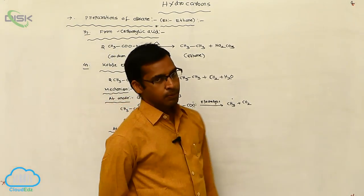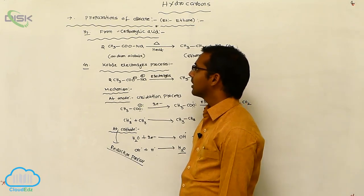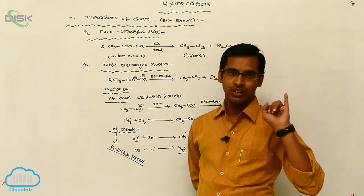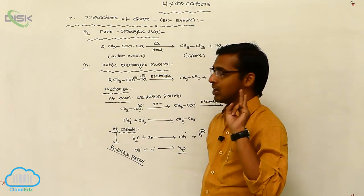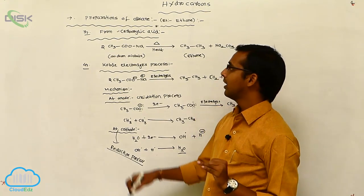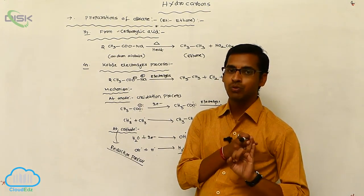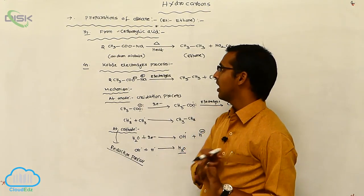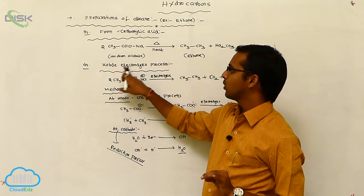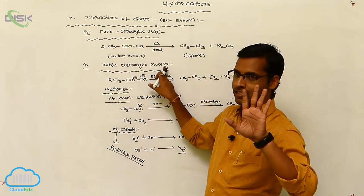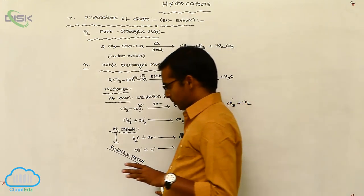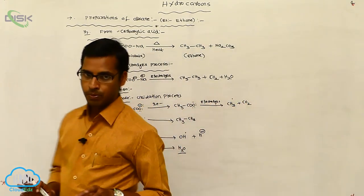So these are the preparation methods of alkanes: one is from unsaturated hydrocarbons; second is from alkyl halide, which includes the Wurtz reaction; next is from carboxylic acid; and finally, the Kolbe electrolysis process.